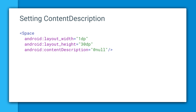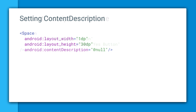For decorative elements such as spacers and dividers, setting content description to null will tell TalkBack to ignore and not speak these elements. Make sure to not include control type or control state in your content description.